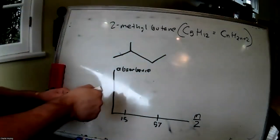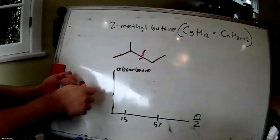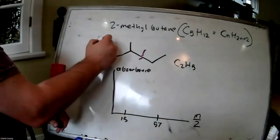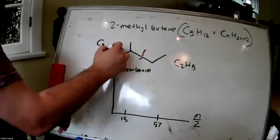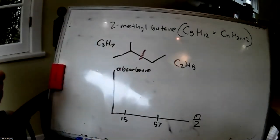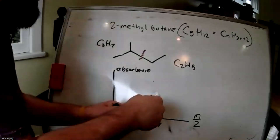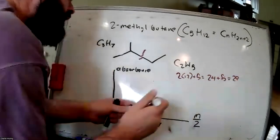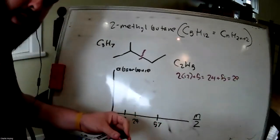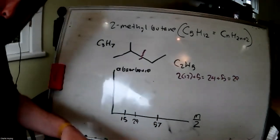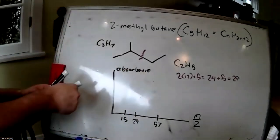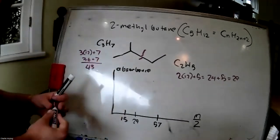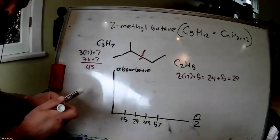What if we fragmented the molecule by firing an electron a different way? We'd get an ethyl group, C2H5, and an isopropyl group, C3H7. For the ethyl group: 2 × 12 + 5 = 24 + 5 = 29. We would have a peak at 29. For C3H7: 3 × 12 + 7 = 36 + 7 = 43. We would see another peak at 43.